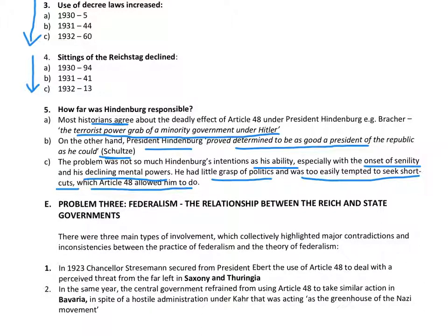As the historian Schultz has pointed out, Hindenburg was genuinely determined to be a good president and to make the constitution work. The problem was his lack of ability — he was old, his mental powers were declining, and he had little grasp of political realities. By nature a soldier, he was too easily tempted to seek shortcuts that Article 48 allowed. It was not so much his intention; he wasn't deliberately undermining democracy. He did not like Hitler and tried to find alternatives to Hitler becoming chancellor.